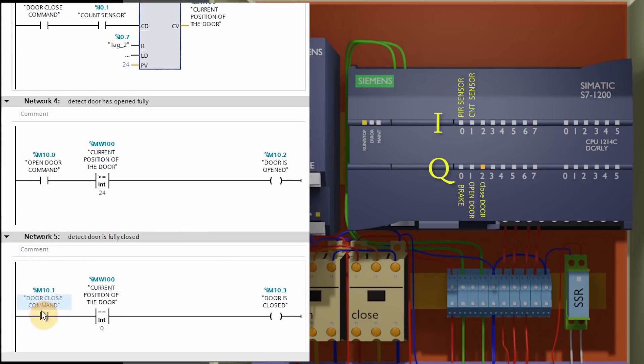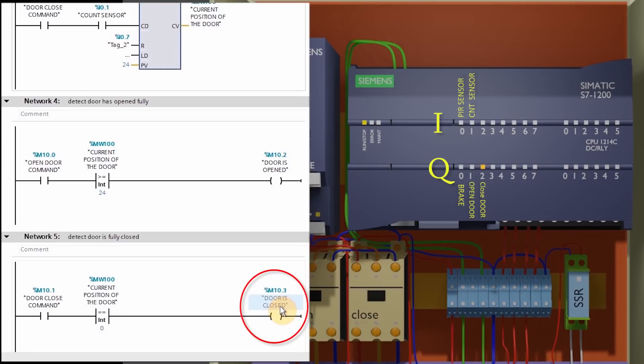Network 5 is used to detect if the door has closed. A comparison instruction compares the current counter value with 0 — if the current value equals 0, this means the door is fully closed and it will turn on memory bit M10.3, which tells us the door has fully closed.